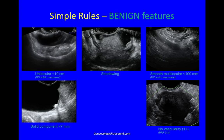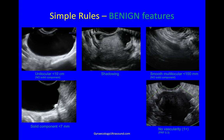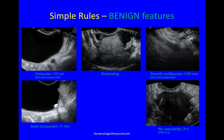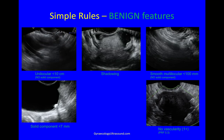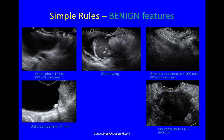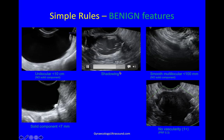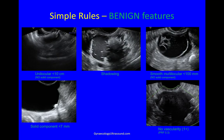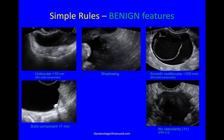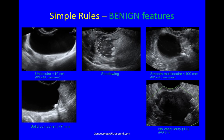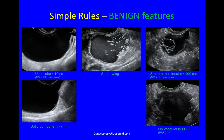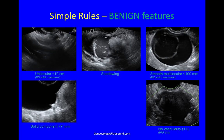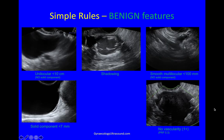The first benign feature is a unilocular cyst — no solid component — of less than 10 cm. Shadowing is a benign feature, visible behind a dermoid. A cyst that is smooth and multilocular with no solid component and less than 10 cm is a benign feature. A solid component which is very small — less than 7 mm — is a benign feature. And no vascularity at a PRF of 0.3 is a benign feature.